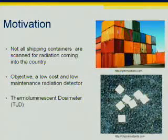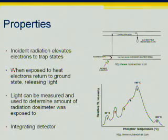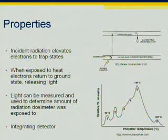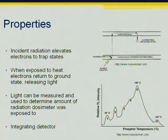An example of TLDs is in the lower right. TLDs work by trapping electrons in higher energy states when exposed to radiation. They can be freed from the trapped states by heating, and a byproduct of this reaction is the production of light. The graph to the right, called the glow curve, shows the light output of a TLD plotted against the temperature of the TLD. To determine the amount of radiation the detector was exposed to, you can simply sum the area under the glow curve.